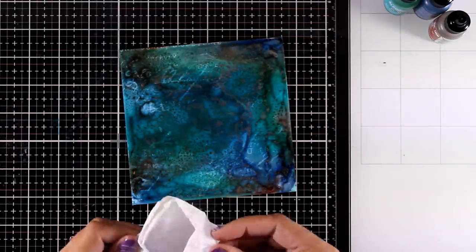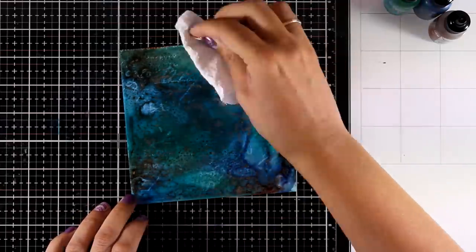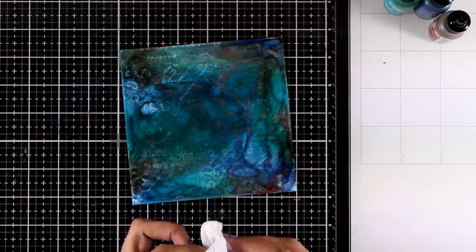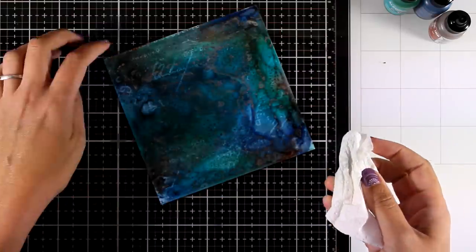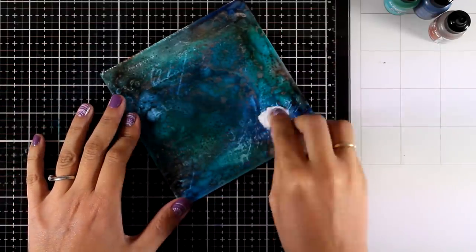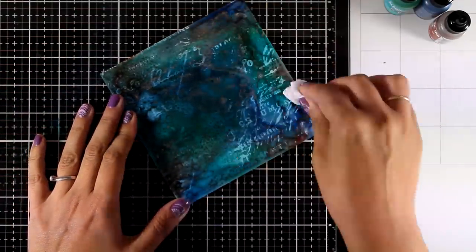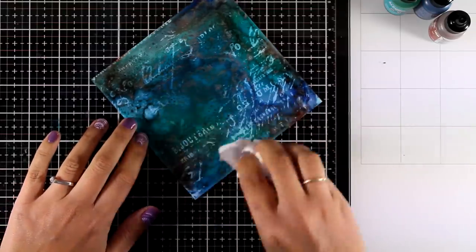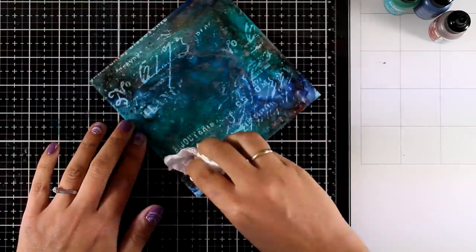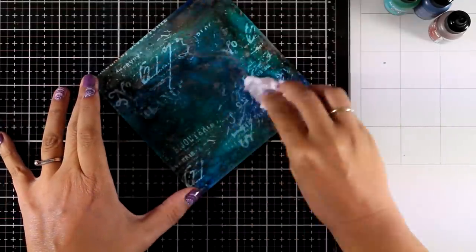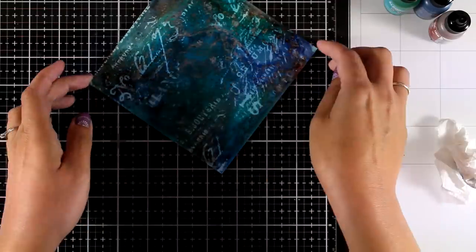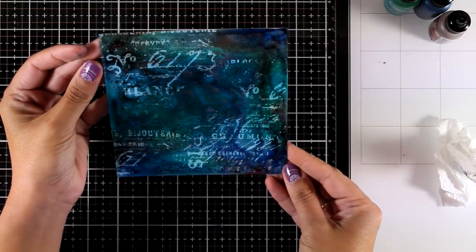I'm also switching to a clean area of my paper towel. Now I can go ahead and start rubbing, removing that ink, and just like magic all that stamping has appeared and it gives that ghost look. I absolutely love this background and I'm super happy that Tim Holtz came up with this ink.